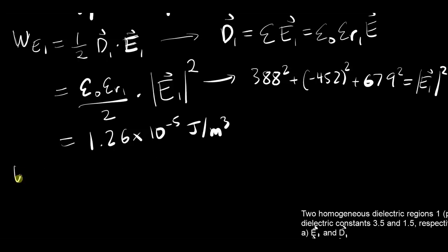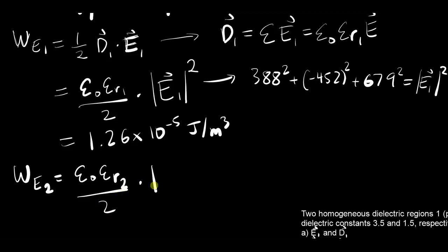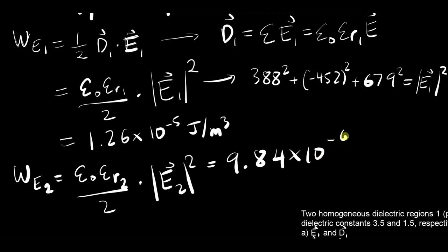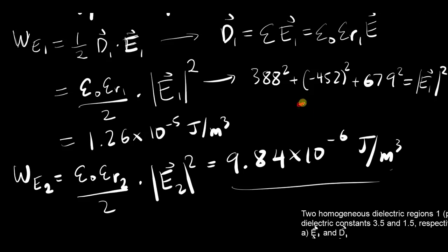To find the energy density in the second region, follow the exact same procedure: plug in epsilon-naught times epsilon-r2 over 2 times the magnitude of E2 squared. That gives approximately 9.84 times 10 to the negative 6 joules per meter cubed. The units should be joules per meter cubed, and that is the end of the problem.